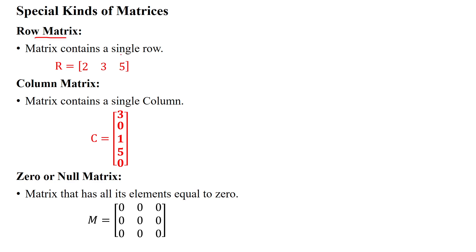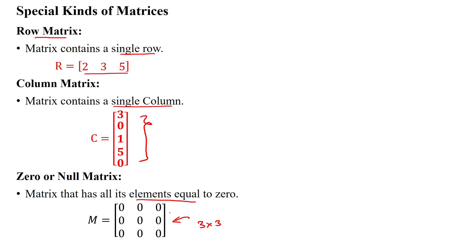A row matrix has only a single row with any number of columns. A column matrix is another special kind, having only a single column but any number of rows. The zero or null matrix has all elements equal to zero. For example, a 3 by 3 matrix where all elements are zero is called a zero matrix or null matrix.